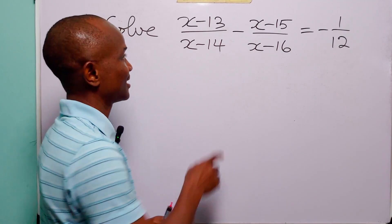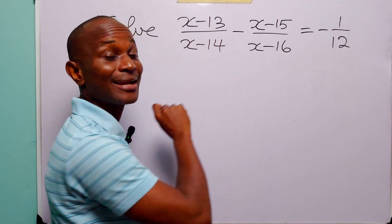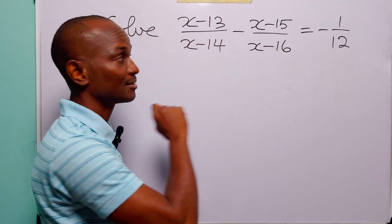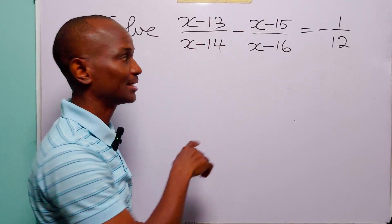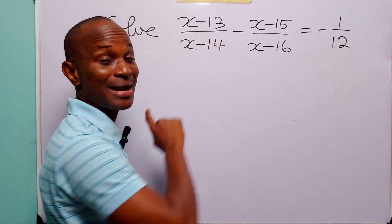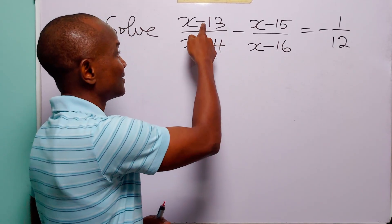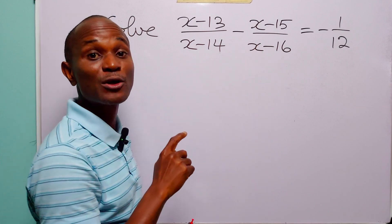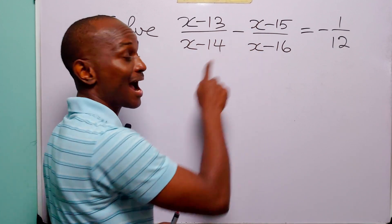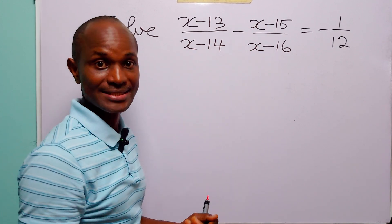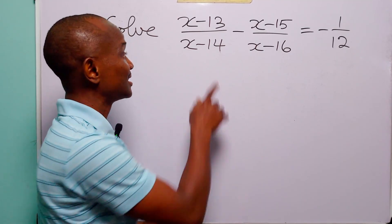...that in doing that, at some point you will have to multiply minus 13 by minus 16, minus 15 by minus 14, and minus 14 by minus 16. But also notice that these four numbers are very close to each other, and the signs before them are all the same.